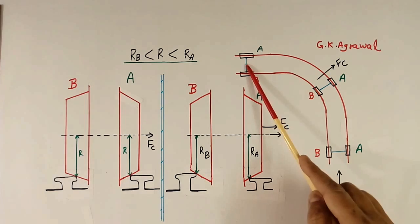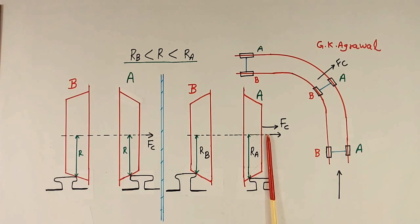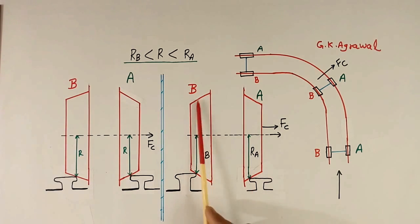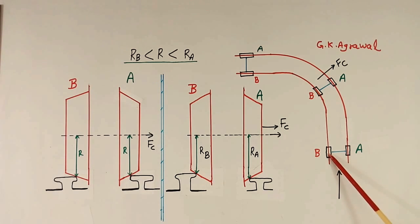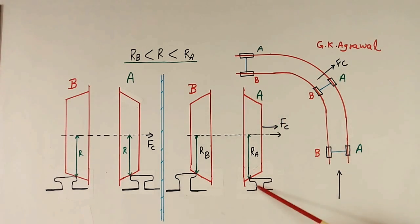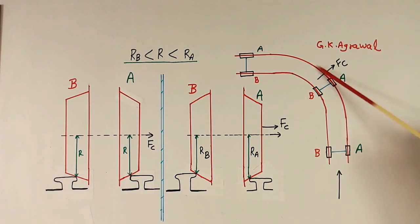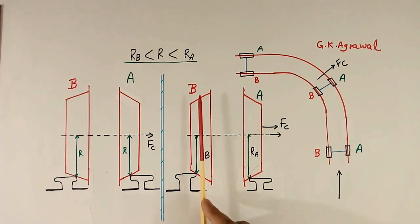So when the train takes a left turn, a centrifugal force is applied. Because of centrifugal force, both wheels shift to the right side. The outer wheel's effective radius increases, so it travels longer — which is exactly what is required. And because the effective radius of the inner wheel is less, it travels shorter. So because of centrifugal force, this wheel effectively becomes bigger and this wheel becomes a little smaller, allowing one to move longer and the other shorter. After completing the turn, the centrifugal force will disappear and wheels A and B will come back to their original position.